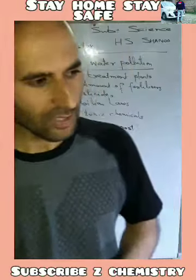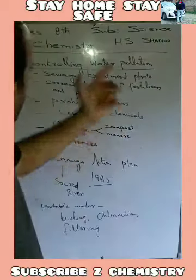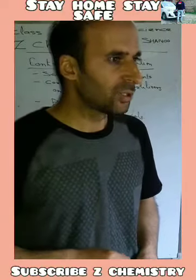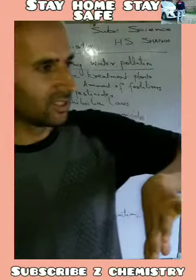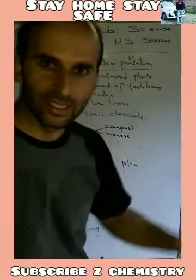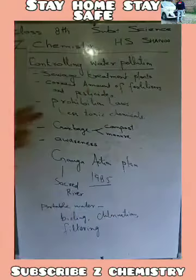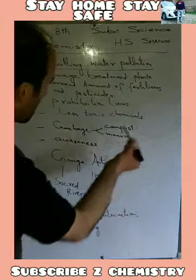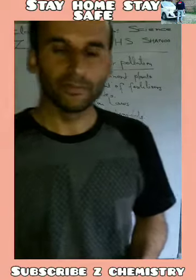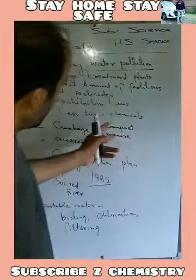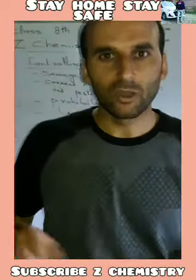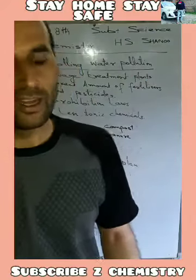Whoever pollutes water, consciously or unconsciously, must deal with strict laws. By this step we can prevent water pollution. Industries and factories must produce less toxic chemicals so that water does not get polluted or become harmful, not only for human purpose but for aquatic life too. Garbage should be converted into compost or into manure using its organic nature, and these can then be used as fertilizers, resulting in fewer toxic substances entering the soil and water bodies.